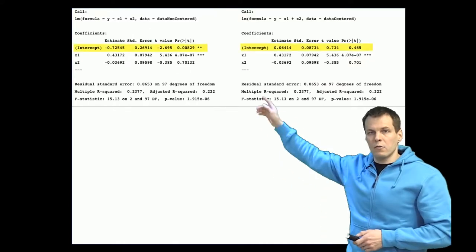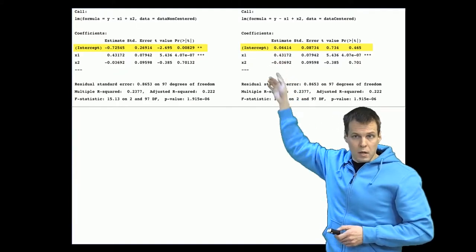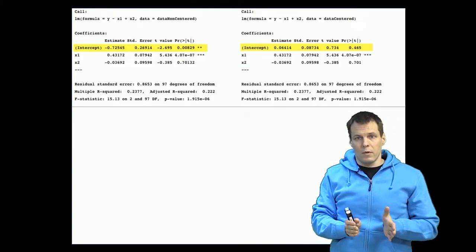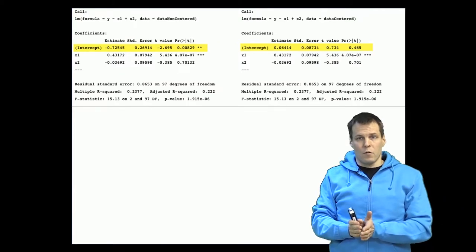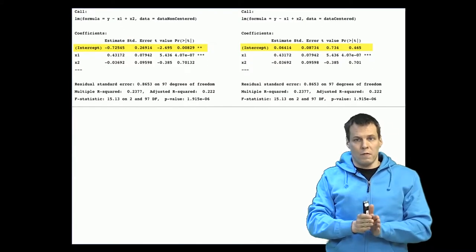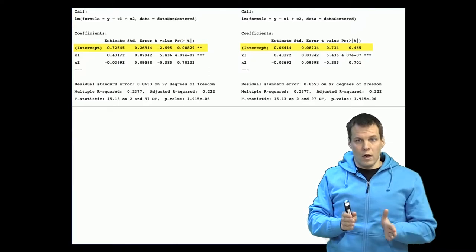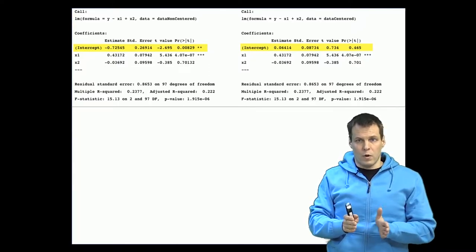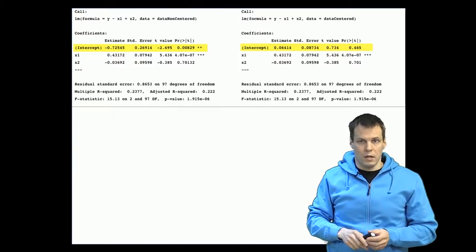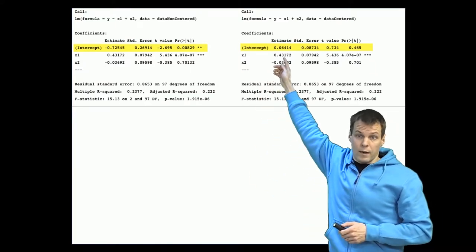So only the intercept is different and the first order effects of X1 and X2 are the same which is quite natural because when you center you're simply subtracting something from X1 and something from X2 and that will only alter the intercept because it doesn't affect the correlations or the covariance of X1 with X2 and the covariance between those two variables and Y. Those are unaffected by centering. So centering will only affect means and in normal regression analysis it only affects the intercept.